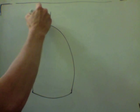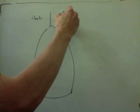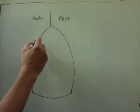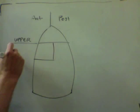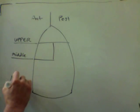On the left side will be the anterior aspect of the lung, and on the right side will be the posterior aspect. So this represents both the right and the left lung, and we'll divide it into upper, middle, and lower lobes.